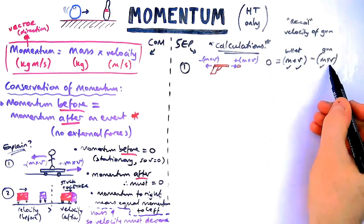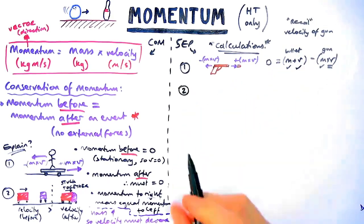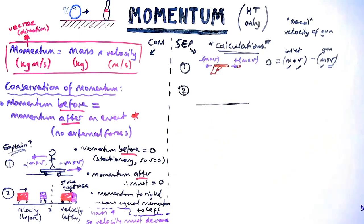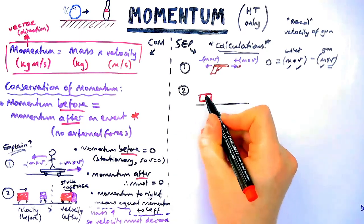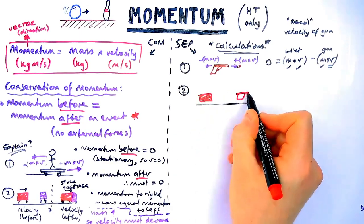In a question they give you the numbers for the bullet or the gun and they might ask you to work out the velocity of one of them. Let's say they ask you to work out the velocity of the gun and they give the other three values, you plug them into that little equation there and then you kind of have to put one on the side of the zero and work out v.